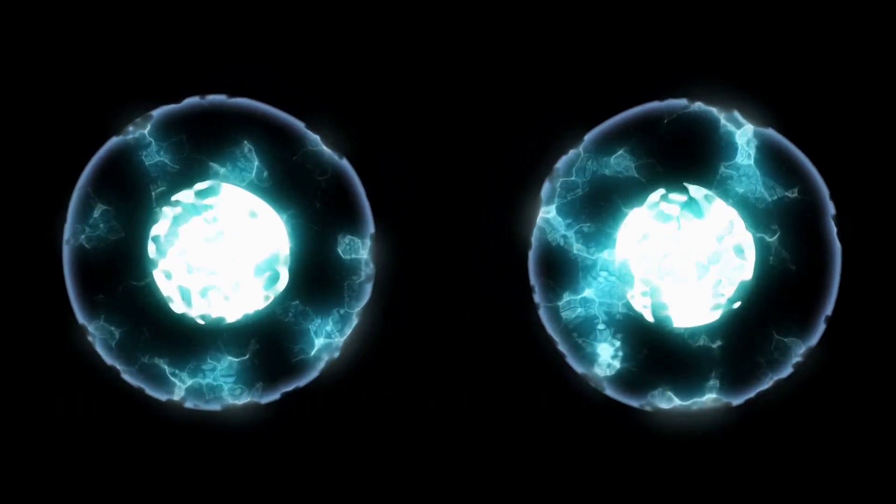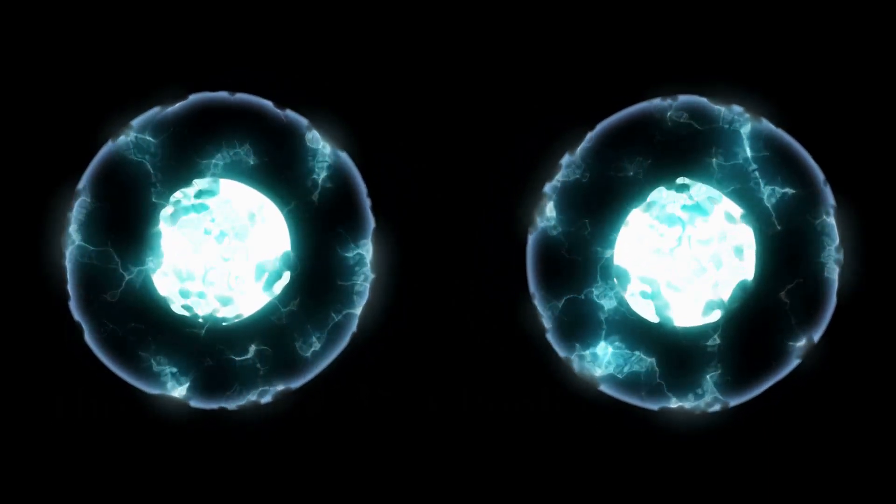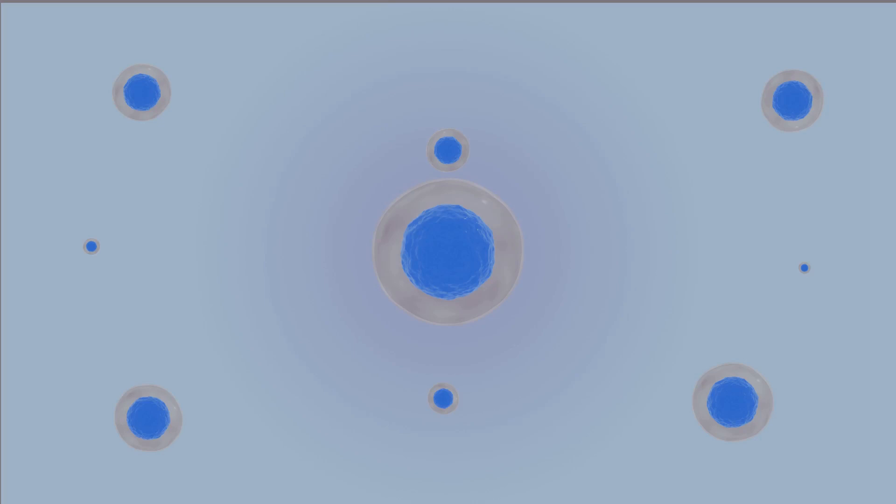Before a cell divides, it must copy its entire DNA, a process called DNA replication. This ensures each new cell receives a complete set of genetic instructions.